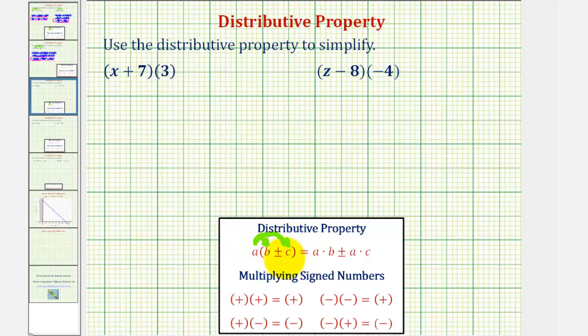Notice both terms inside the parentheses are being multiplied by a. But notice how our problems look a little bit different. We have the quantity x plus seven times three and the quantity z minus eight times negative four.